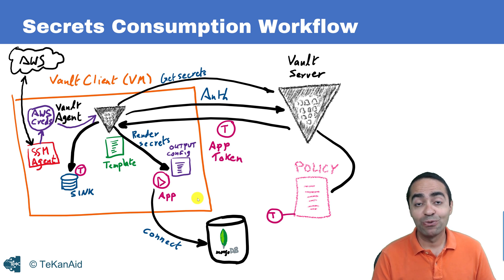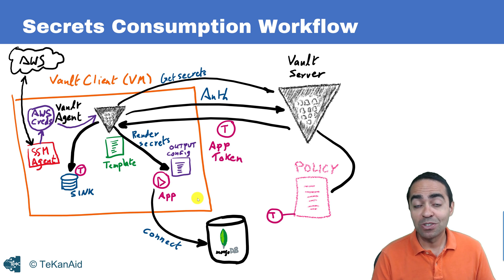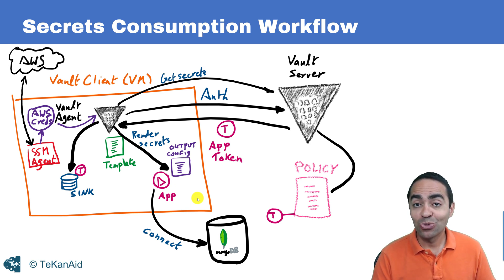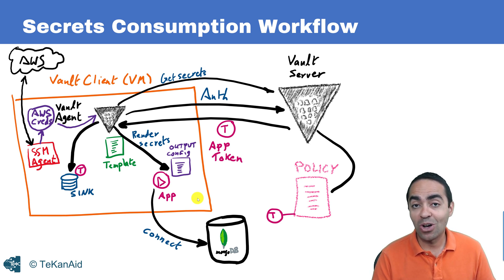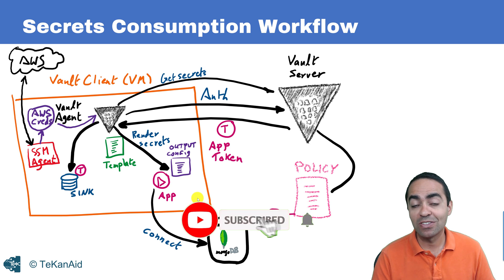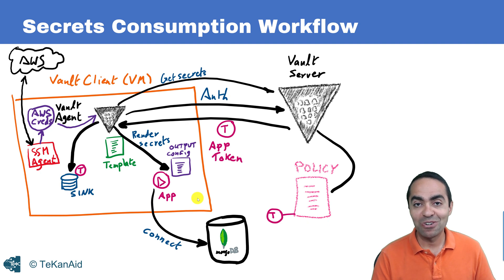Hopefully this has been helpful in understanding how we can introduce secrets securely with a platform that provides identity to its resources. You'll find much more in the Vault 202 course, where we dig into the actual configuration — how this works in Linux, how it works in Windows, and how you establish the full trust mechanism with the AWS auth method in Vault. Hopefully this has been helpful, and I'll see you in another video.